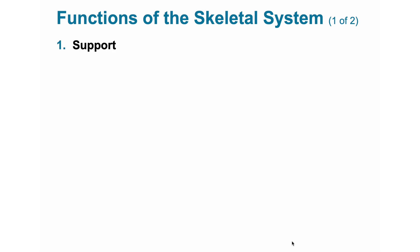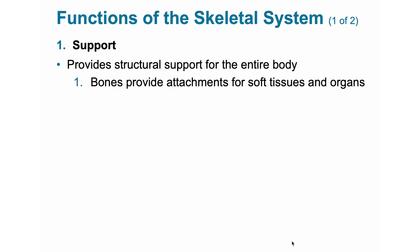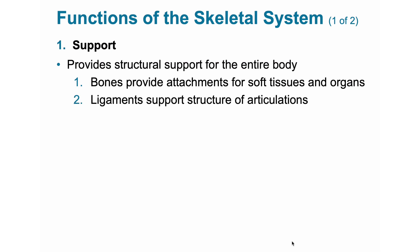1. Support. The skeletal system provides structural support for the entire body. Individual bones or groups of bones provide a framework for the attachment of soft tissues and organs. Ligaments often connect two bones together, most notably in the joints, acting like strong, firmly attached bands that stabilize a joint and hold the ends of the articulating bones together — preventing the bones from twisting or moving too far apart, which would lead to dislocation. Tendons, on the other hand, connect muscles to bone.